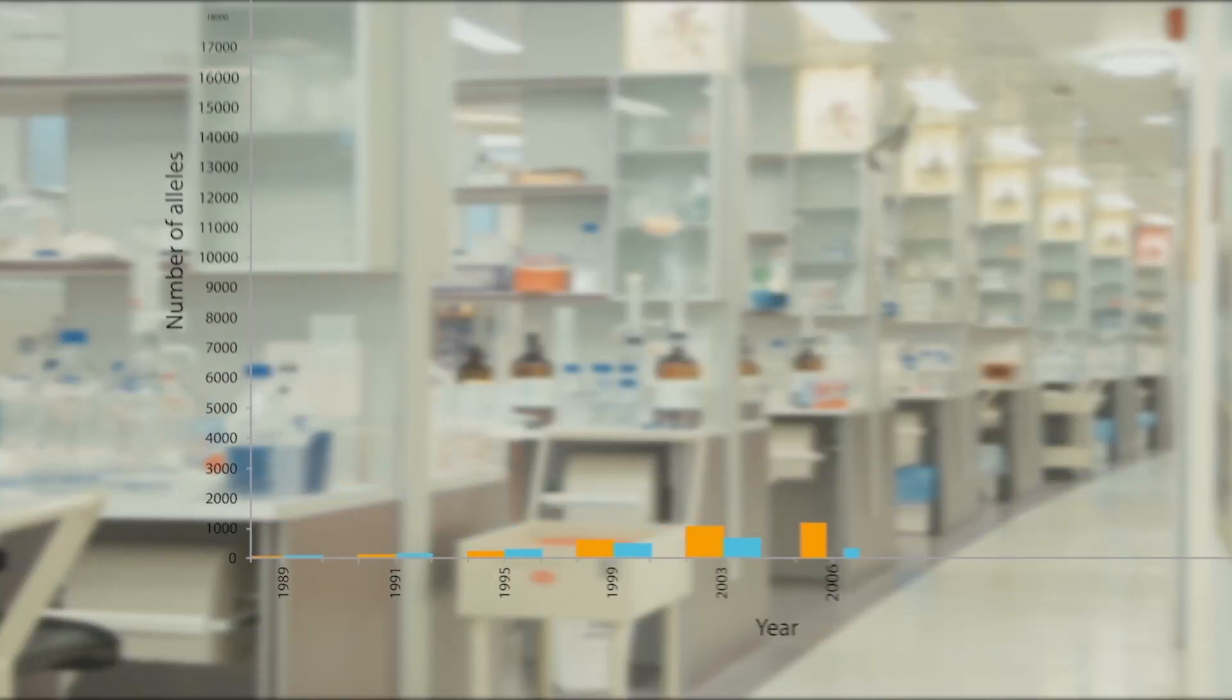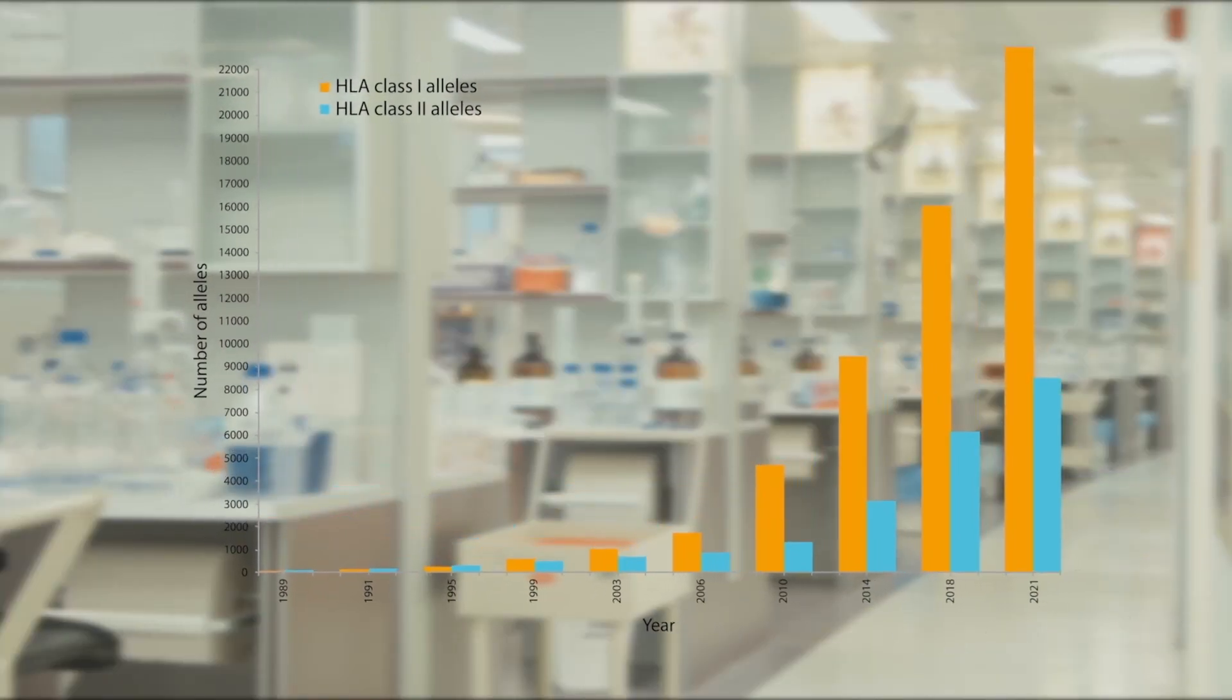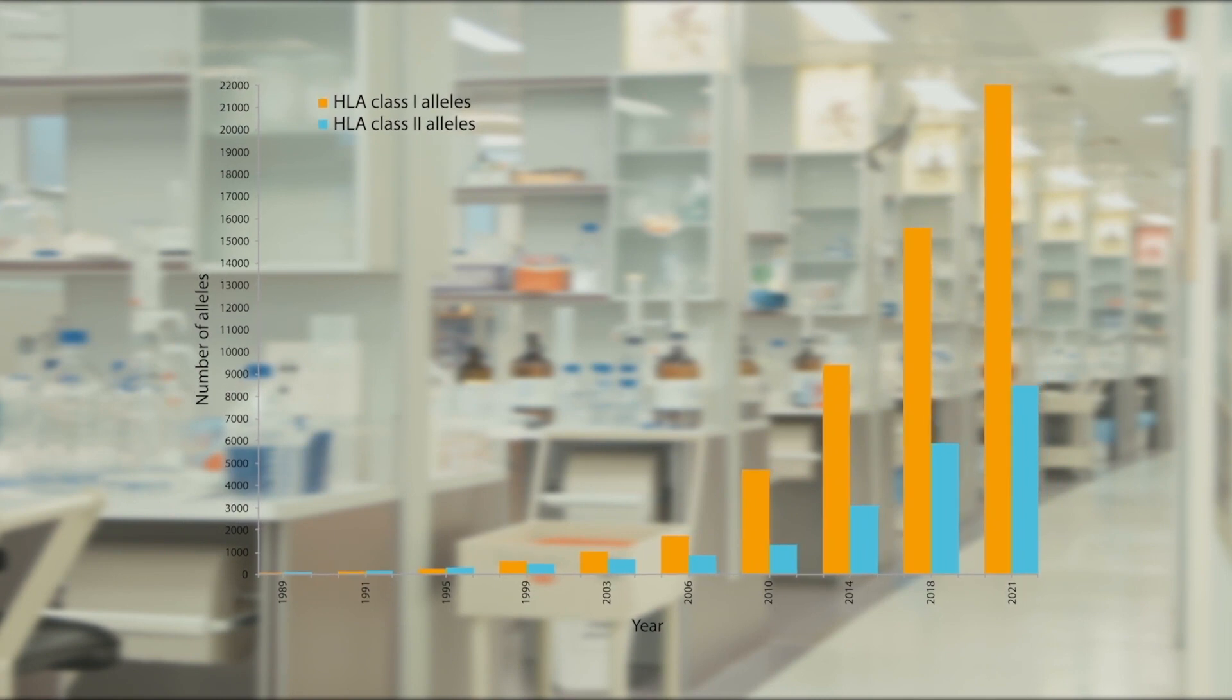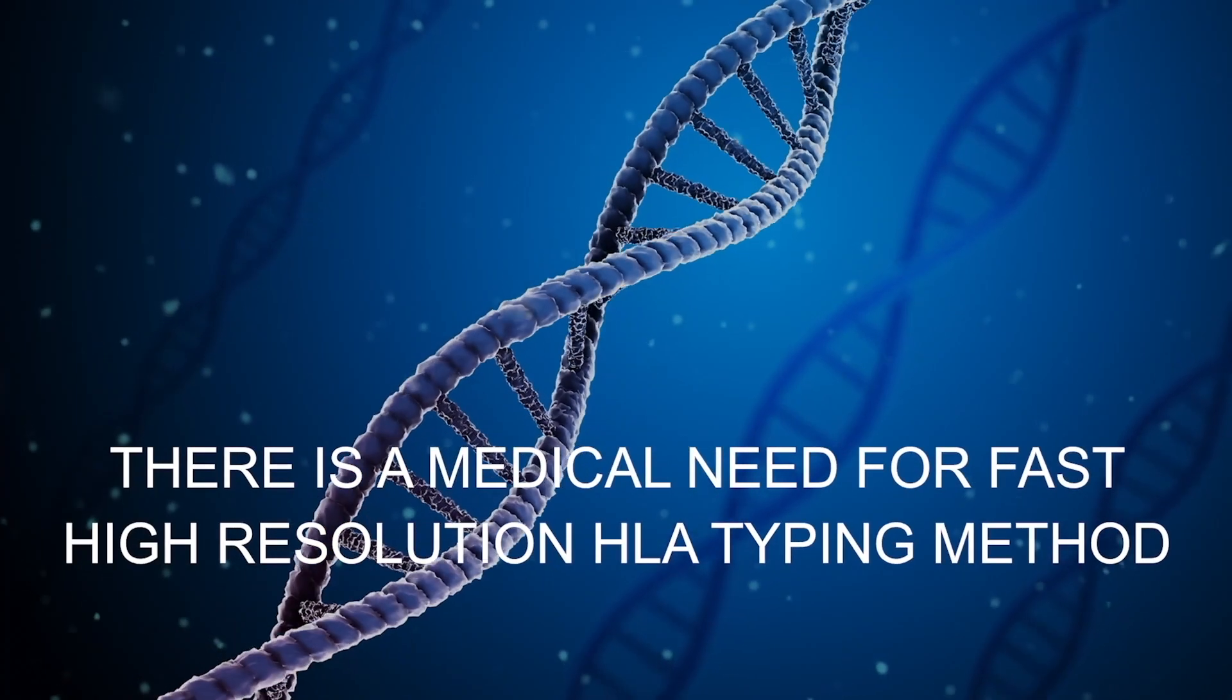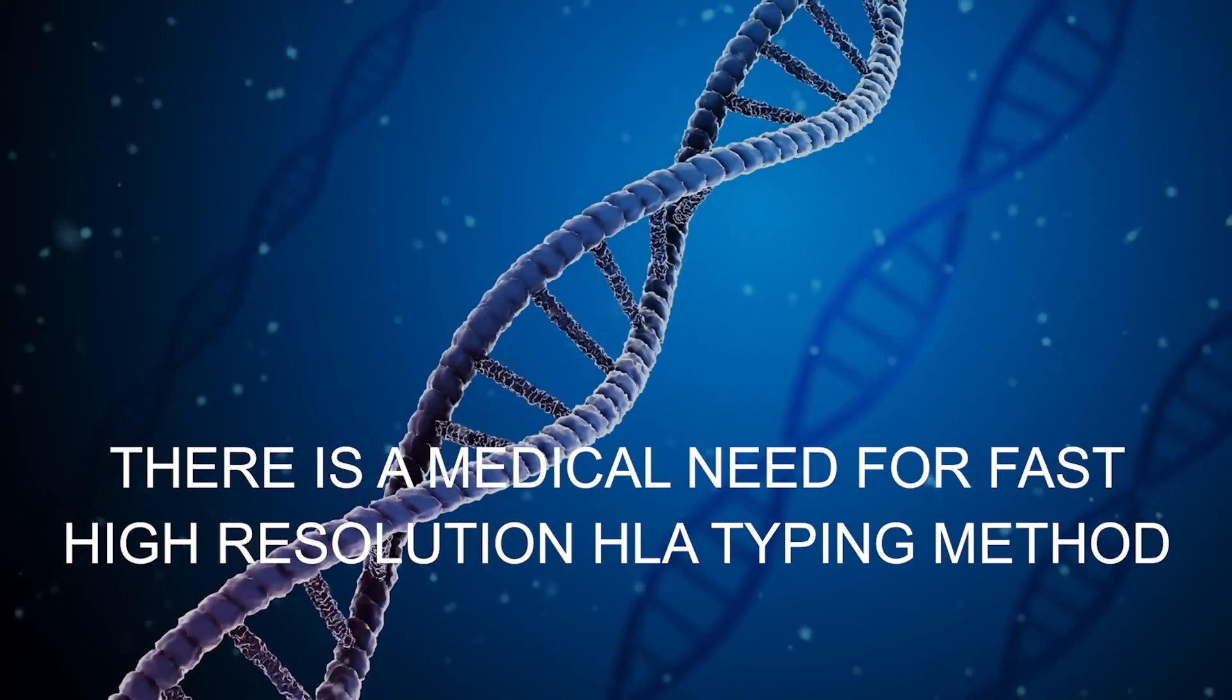Many patients on the tissue transplant waiting lists are tissue typed using legacy techniques with high levels of ambiguity. There's a need for fast, simple, and unambiguous sequencing-based HLA typing methods.